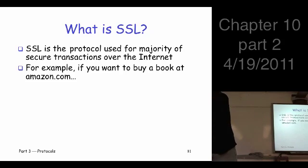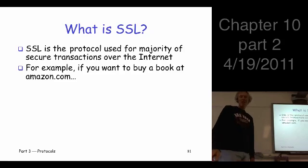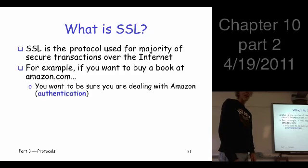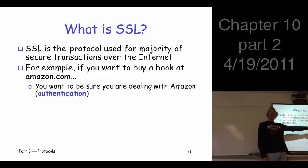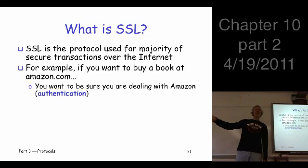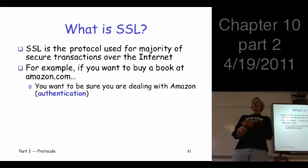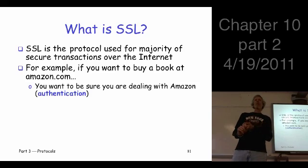Let's take an example. Suppose you want to buy a book from Amazon.com. You go to Amazon.com. Now, what do you need to know? Well, you want to be sure you're dealing with Amazon. Why? Because you're going to give them your credit card information. You want to authenticate that it's Amazon. Okay, once you've authenticated it's Amazon, now you've got a session key — so what are you going to do with that session key?